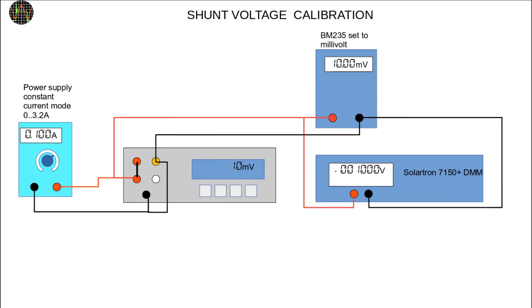If you have a power supply that can deliver up to 3.2A in constant current mode, the simplest approach is this diagram which is what I was using. Of course you only need 1 DMM instead of 2.